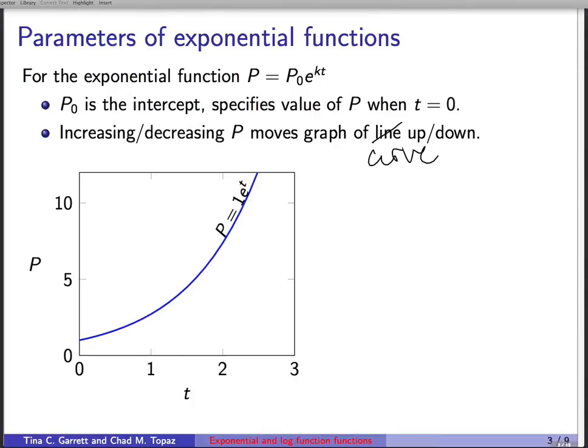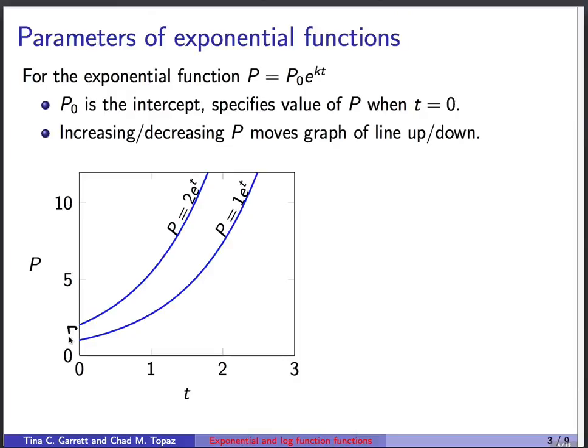Here's 1e^t. Here's 2e^t. So the intercept is shifted up by one unit right here. That's one unit. Can do one more. There's 3e^t. That shifts us up by one more unit. One from here to here and one from here to here.